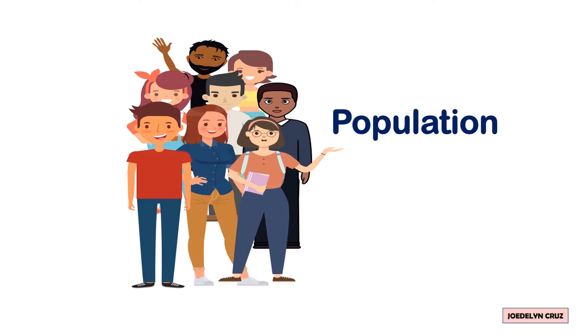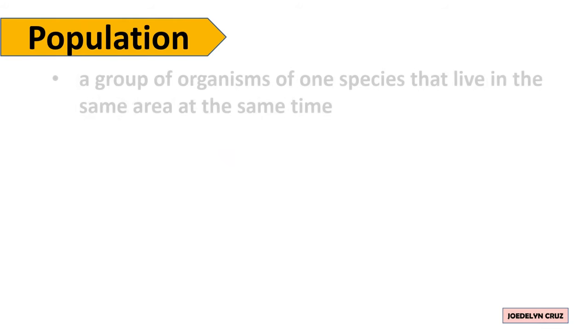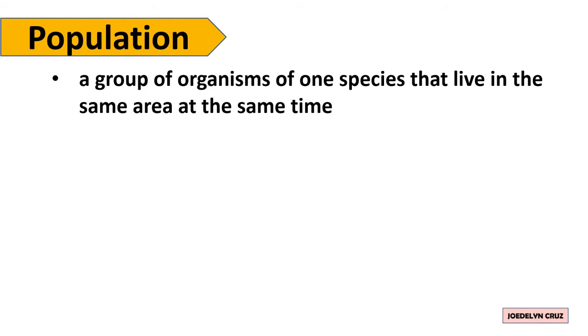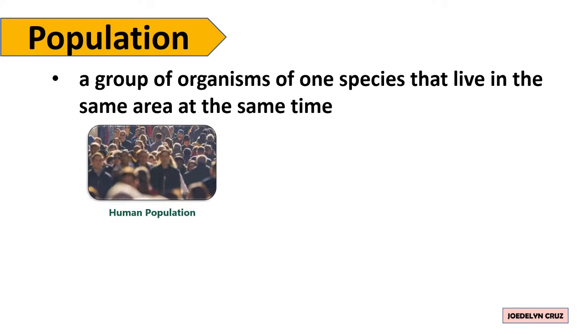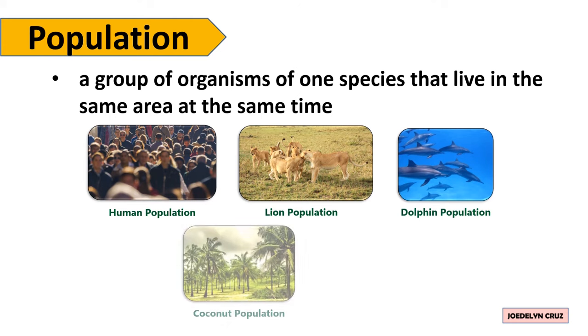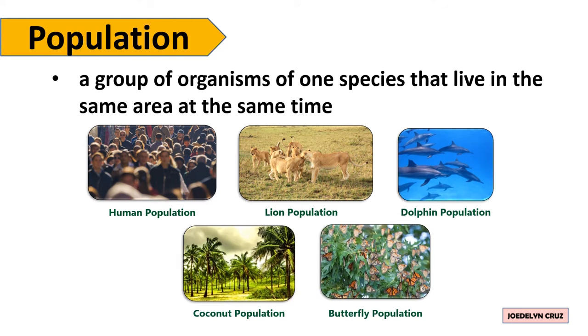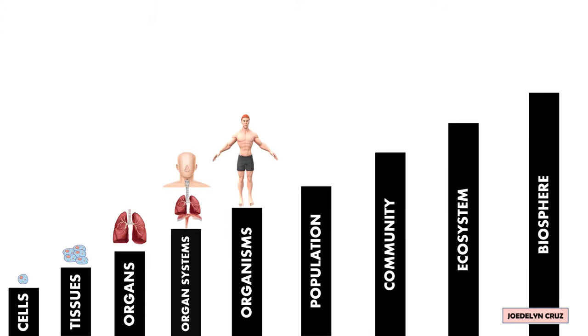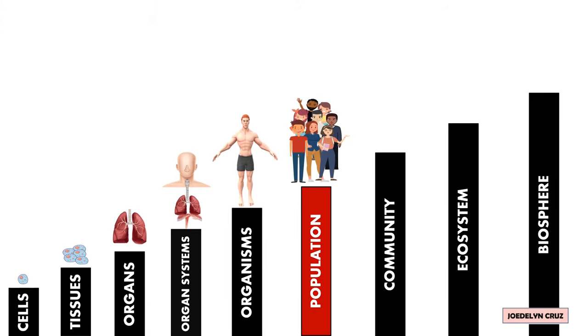When organisms like humans live together in the same area at the same time, a population is created. Population is a group of organisms of one species that live in the same area at the same time. The examples of populations are Human population, Lion population, Dolphin population, Coconut population, and Butterfly population. Again, population is higher than organisms.